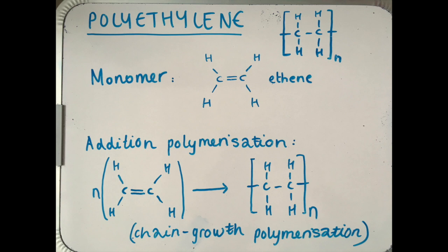Polyethylene is formed from addition polymerization of ethene whereby other molecules of ethene are added across the double bond. This can also be called chain growth polymerization.